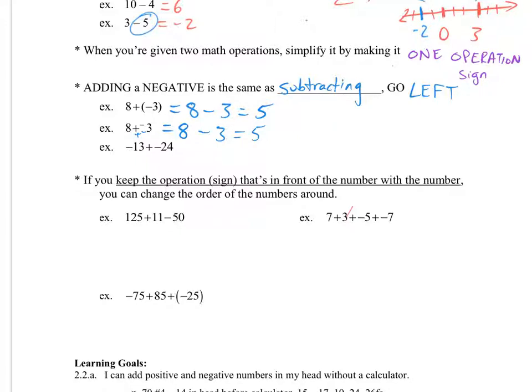This next one where I have my negative 13 plus a negative 24, that's negative 13. A sign applies to the number that's right after it. The positive negative, the plus minus that's right in front of the number is kind of linked to that number. So I have this negative 13 here. Then I have a plus and negative 24. This plus and negative becomes minus.